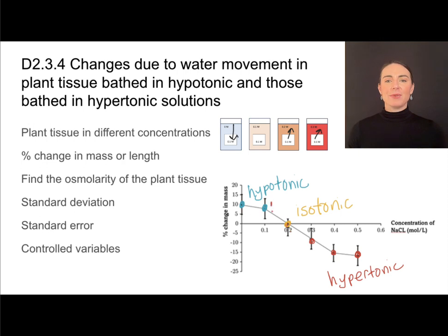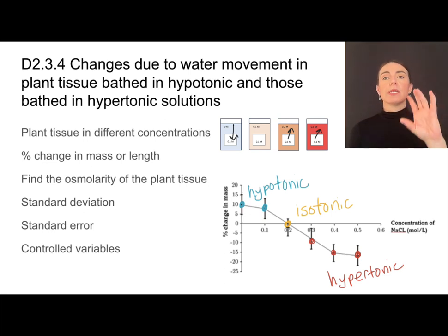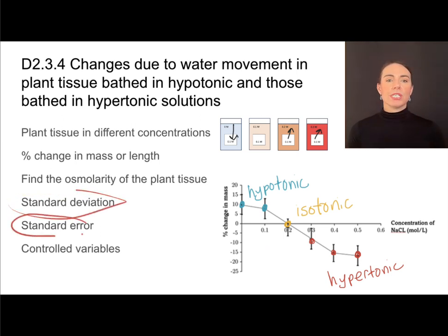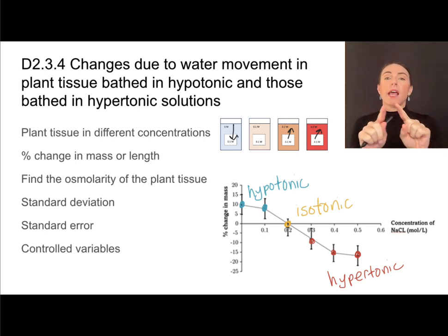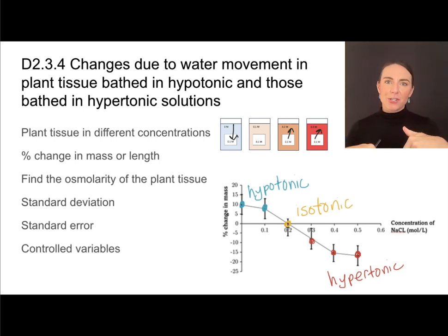If you don't have an exact data point, you can see where the line crosses the horizontal axis — that's where there's zero net gain in mass. You can also visually represent variation in data using standard deviation or standard error bars on your graph. Controlled variables should be considered, such as getting plant tissue samples from the same carrot, from the inside without the skin, having the same surface area to volume ratio, allowing the same amount of time, and controlling the temperature of the solution.